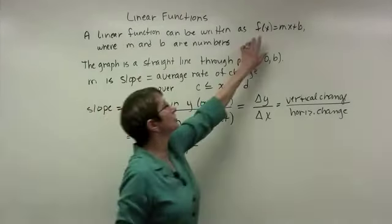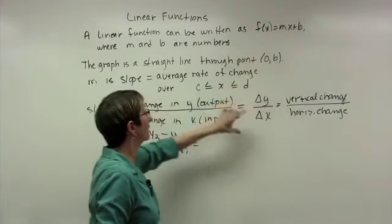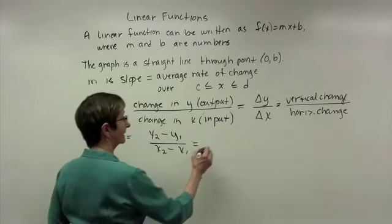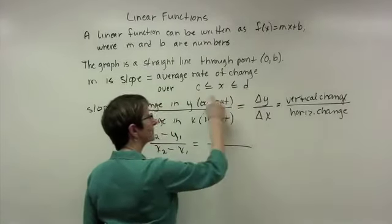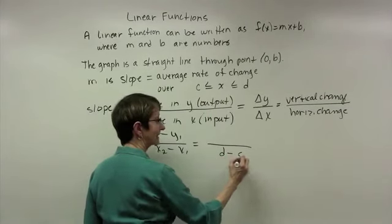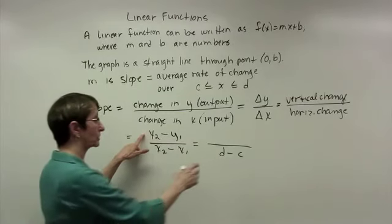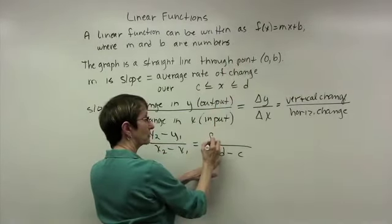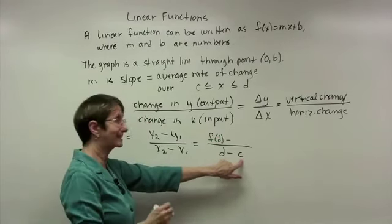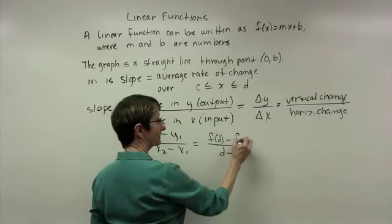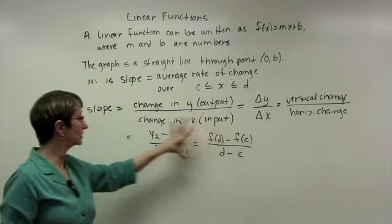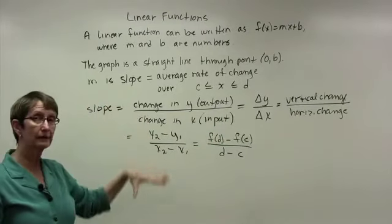And using the function notation with our point where x ranges from x equal to c up to x equal to d, the difference in the two x's would be d minus c, so that the y value associated with d using the function notation is f(d) minus, and the y value associated with c would be f(c). We'll be using all of these notations and more as we study more about linear functions.